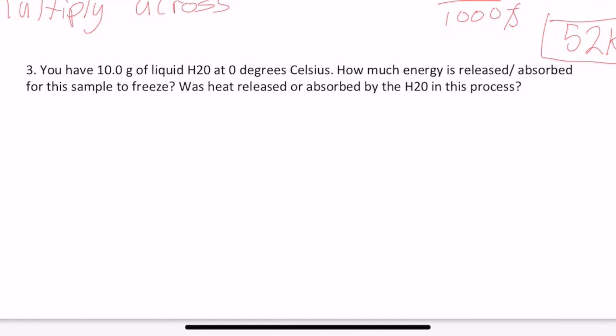Okay. So number three, you have 10.0 grams of liquid H2O at 0 degrees Celsius. So go ahead and start circling what you need to do. How much energy is released or absorbed for the sample to freeze? Was heat released or absorbed by the H2O in the process? So circle what is relevant to your problem. That's always a good habit, so that way you know what is going on. Another thinking break. Just like before, either pause and solve, or give yourself time to think about what formula is needed to solve this problem.